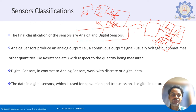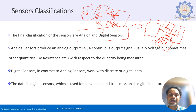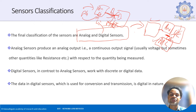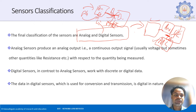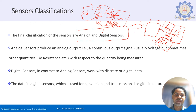To summarize: an analog sensor converts a physical quantity into an analog quantity connected to an analog pin, requiring an ADC to convert it for the microcontroller. A digital sensor converts the physical quantity into digital using its own built-in ADC, and that digital value goes directly to the digital pin of the microcontroller.